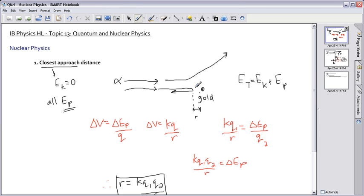We've got alpha particles flying in and coming near gold, and here what happens of course is they will come really close and then turn around. That would be the closest approach distance.